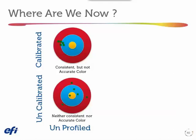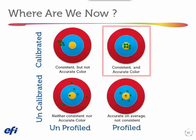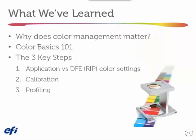Going back to our status diagram: we went from uncalibrated to calibrated — consistent but not accurate. Now with profiling, we're in the upper right corner: not only consistent, but consistently hitting a standard like SWOP, GRACoL, or FOGRA, depending on where you are. These are the industry references we match our presses to so they're consistent from device to device and can win the most demanding customers.